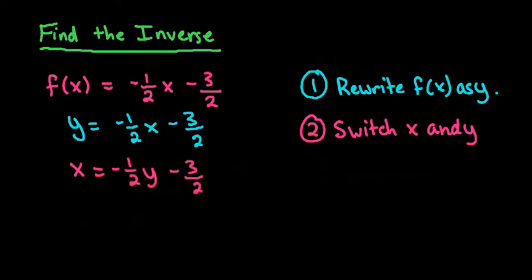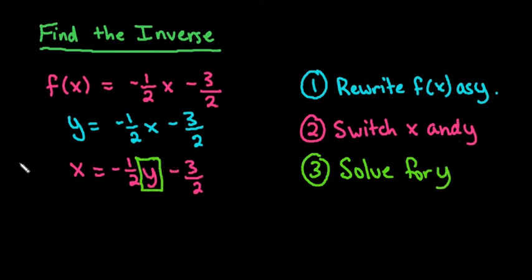And now our next step is going to be to solve for y. So we want to get this y by itself. In order to do this, to get rid of fractions, I'm going to multiply this entire equation by negative two.